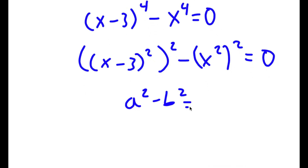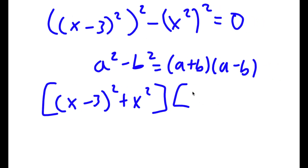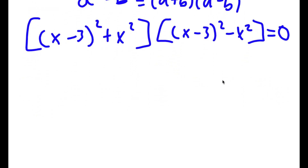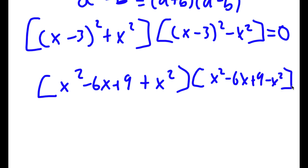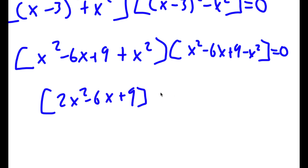Using the difference of squares formula, a squared minus b squared equals a plus b times a minus b, this becomes x minus 3 squared plus x squared times x minus 3 squared minus x squared equals 0. Expanding x minus 3 squared, I get x squared minus 6x plus 9. So now I have 2x squared minus 6x plus 9 times negative 6x plus 9 is equal to 0.